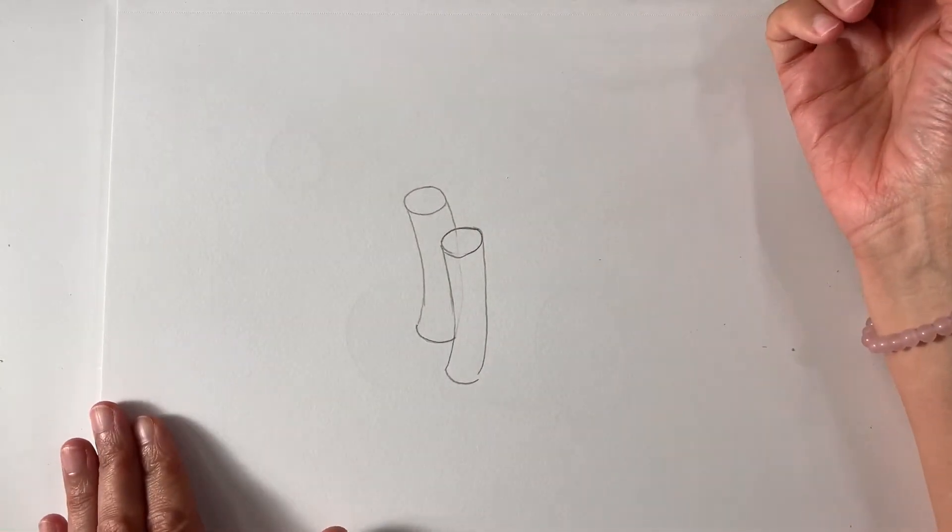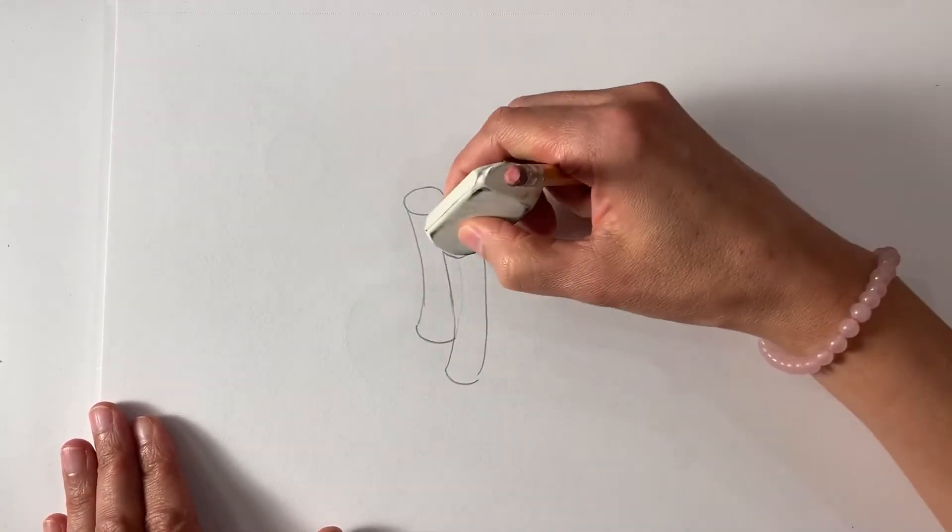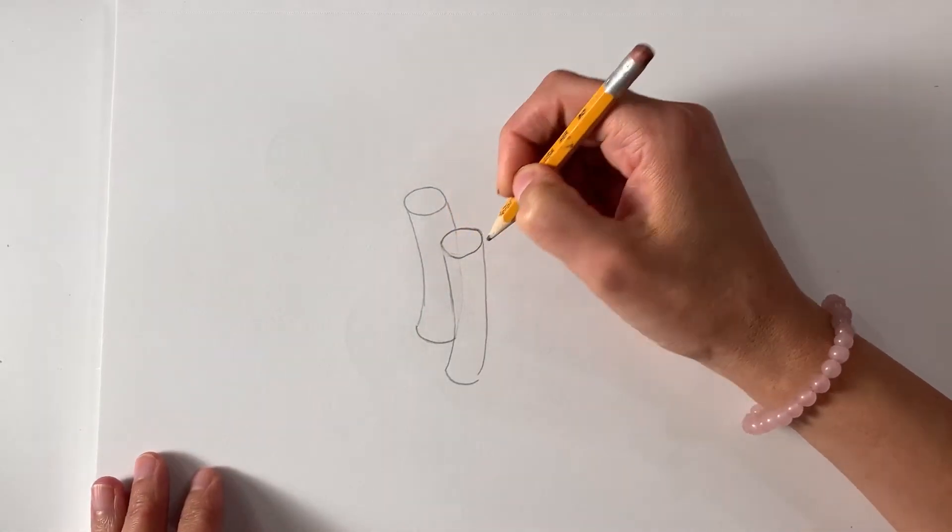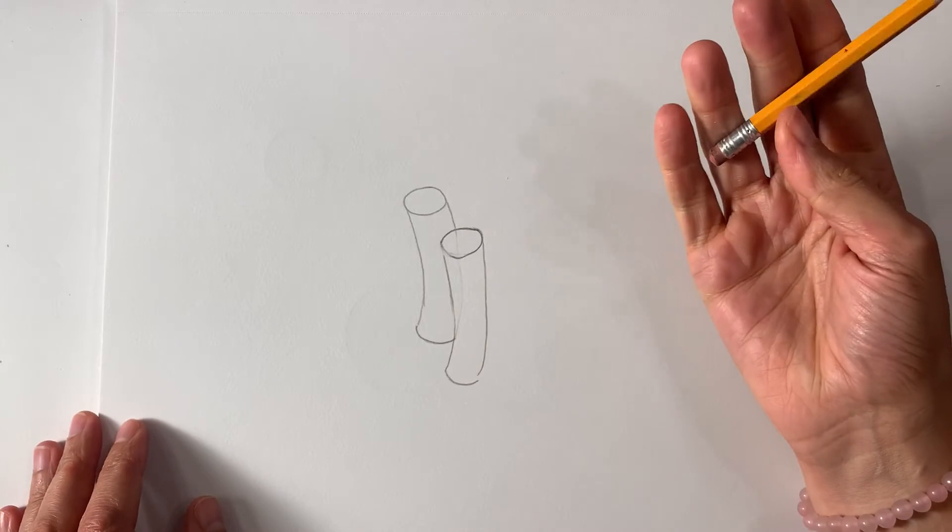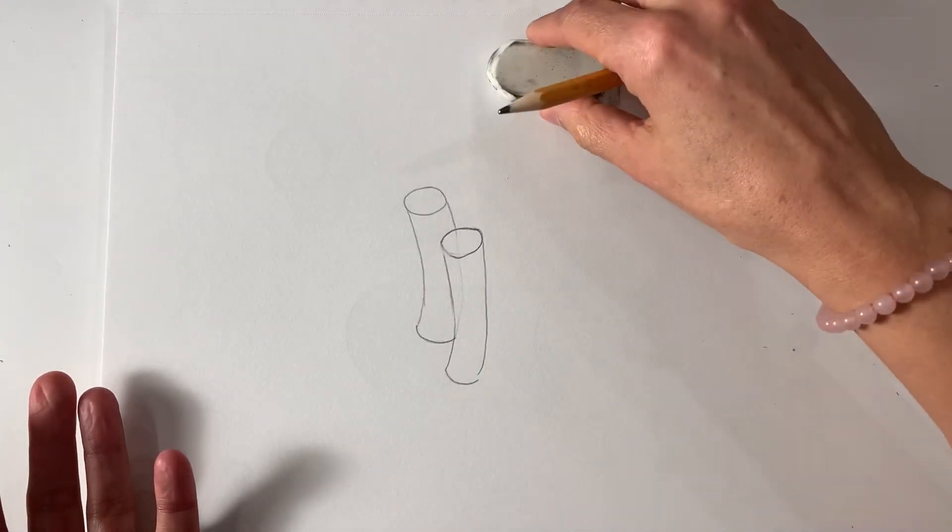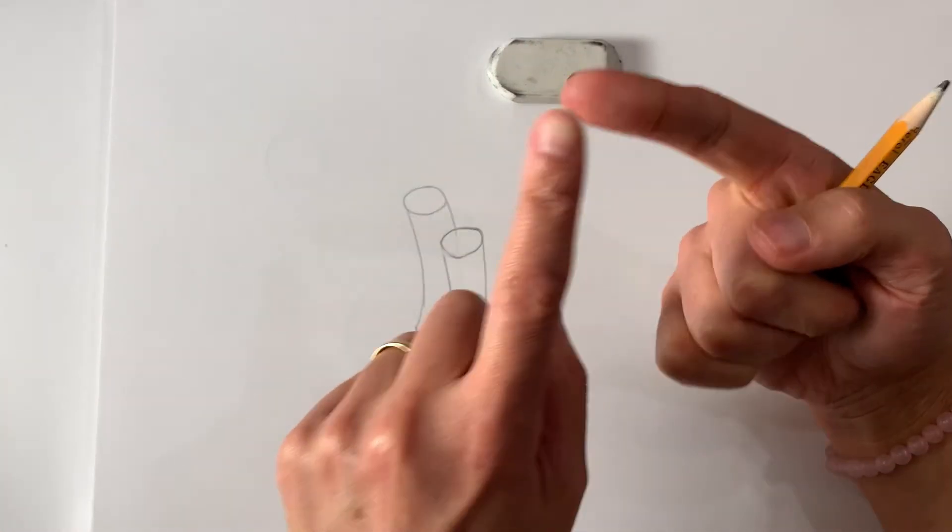And then the third way to create something and give it the illusion of three-dimensional is to add shading. If you don't have any special tools, this is all you need. A pencil, eraser and actually your finger.